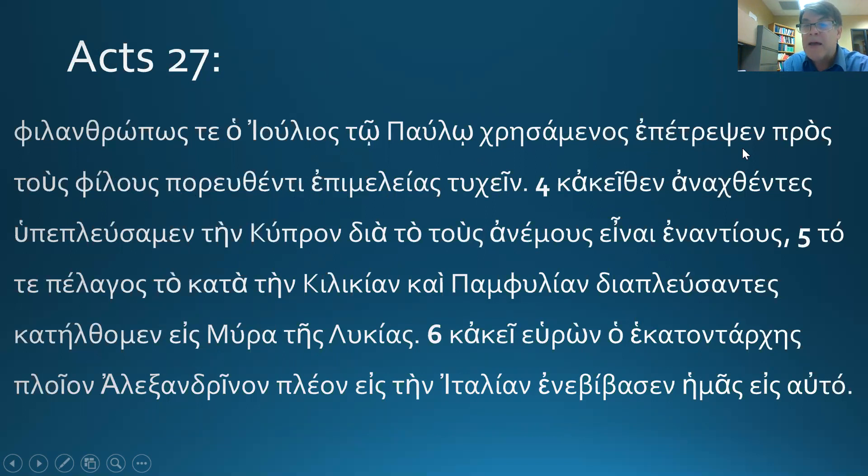Epitrepsen, epetrepsen, psi is the key to a hidden sigma. So we have a hidden sigma. Sigma epsilon is a third-person singular past tense ending. The way I usually say it is a nu with an epsilon in front of it is almost always a movable nu. Throw it away. Epsilon is a very common third-person singular, active, past tense, indicative ending.